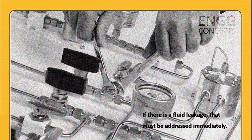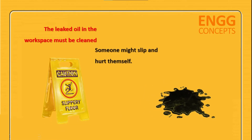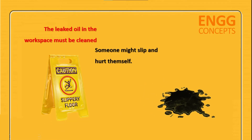In a hydraulic system, if there is a fluid leakage, it must be addressed immediately. Stop the machine and find the source of leakage, and clean the liquid oil from the workspace. Fluid leakage and spills cause a slippery and messy work environment around hydraulic equipment. If there is oil on the floor, someone might slip and hurt themselves, and sometimes these injuries might be life threatening.